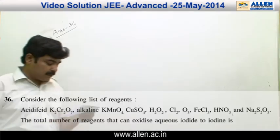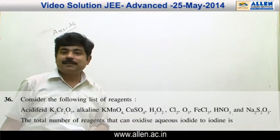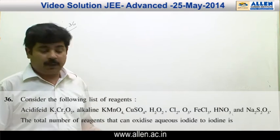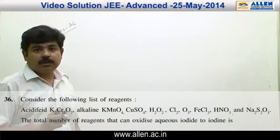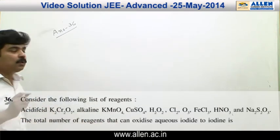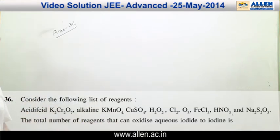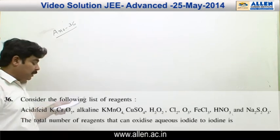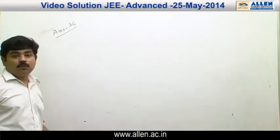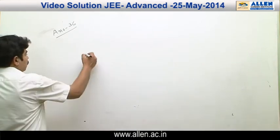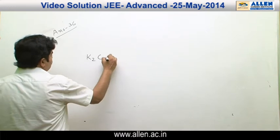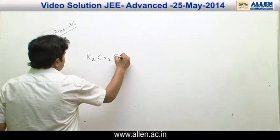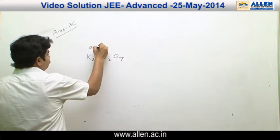In question number 36, 9 reagents are given and the question is how many reagents convert aqueous iodide into I₂. The first reagent is K₂Cr₂O₇ acidified.